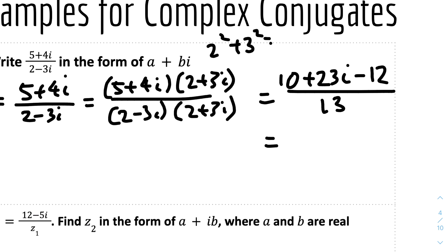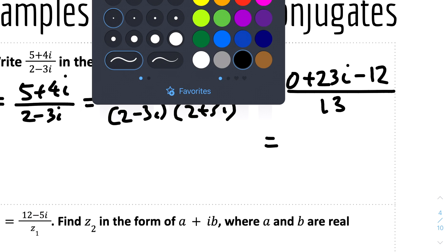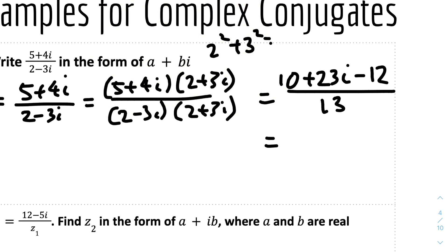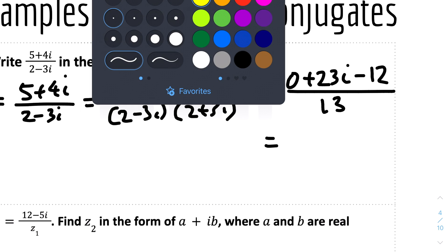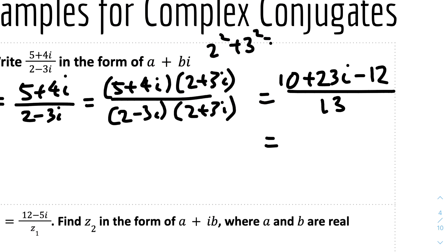Now we simplify and collect real and imaginary parts. The real part is 10 - 12 = -2, so we get -2/13 + 23i/13. That's the answer for Example 1.